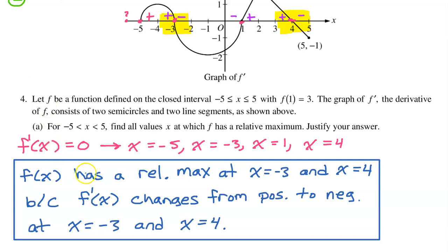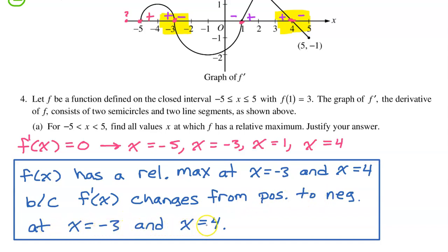Here's our summary statement and justification: f of x has a relative maximum at x equals negative 3 and x equals 4, because f prime changes from positive to negative at those x values.